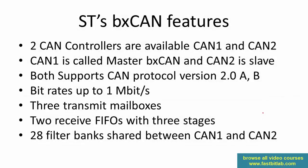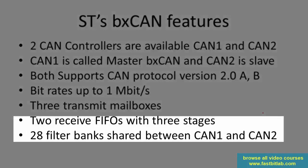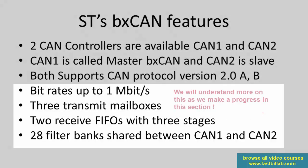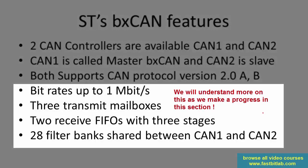Each peripheral has two receive FIFOs with three stages and 28 filter banks, which are shared between CAN1 and CAN2. We'll explore the transmit mailboxes, receive FIFOs, and filter banks in more detail as we progress — no need to worry about them right now.